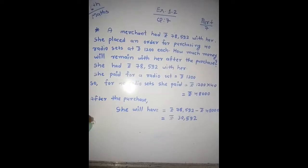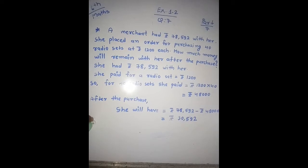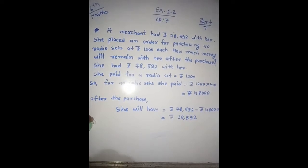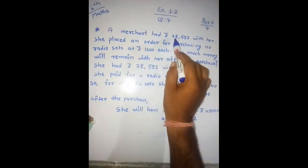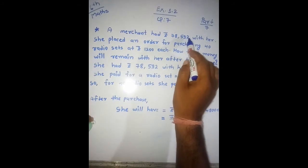Good morning children, this is video part 7 of class 6 math, and in this video we are going to solve exercise 1.2 question number 7. Let's read the question: A merchant had rupees 78,592 with her.